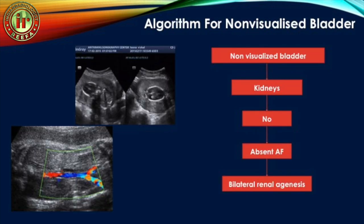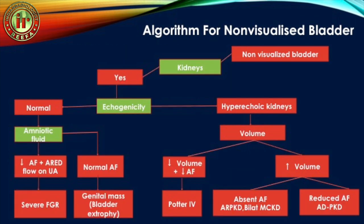When the bladder is not visualized, we first look at the kidneys. If the kidneys are absent and amniotic fluid is totally absent, it is bilateral renal agenesis, which can be confirmed on color Doppler by showing absence of the renal arteries.